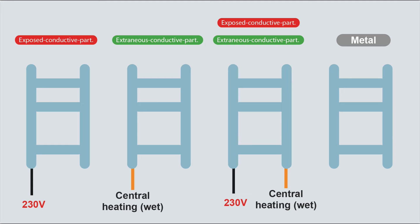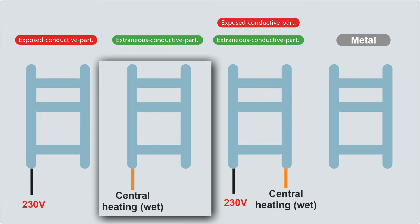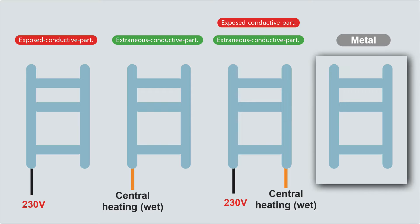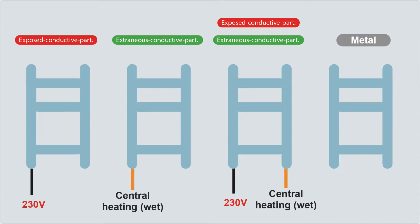I'm using the example of a towel rail here because that could be an exposed conductive part. It could be a purely electric towel rail connected to the 230 volt supply, or it could be connected to the wet system - the central heating - then it could be an extraneous conductive part. Or it could be dual fuel - electric and wet - and it could be an exposed or extraneous conductive part. Or it could just be a metal towel rail on the wall, not connected to the supply, not connected to any pipework - purely just a piece of metal. So we need to be able to prove, if we think it's just a piece of metal on the wall, that it can't introduce a potential. It's quite easy to see if it's an exposed conductive part - there's any power going to it. It's a little bit more tricky to know if it's an extraneous conductive part, and there's a test we can do to find that out.